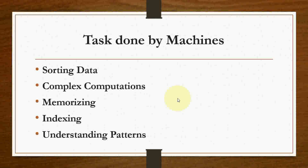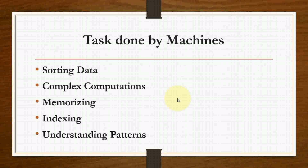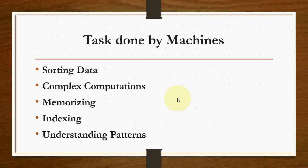Now, some tasks done by machines better than humans. First is sorting data: if someone gives you 500 rows of data to sort, it is complex for a human, but a computer can produce the result in a couple of seconds. Second is complex computation: calculations that are very complex for humans take too much time and may not produce exact results, but machines handle them far better and faster.